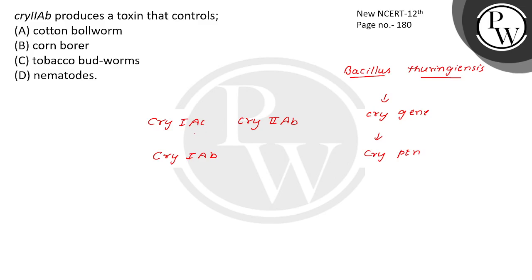Cry1AC and Cry2AB — who are they controlling? They control the cotton ball worm. And who else is being controlled? The corn borer.